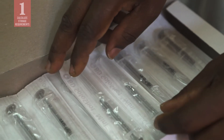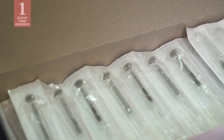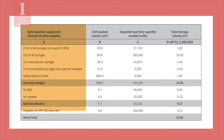To do this, you will need to calculate the storage requirement for each type of equipment, then add these together for the total volume. Let us use this table to walk through the calculation. First, list the safe injection equipment, diluents, and other supplies that you are ordering. Then, for each item, list the unit packed volume — the volume in cubic centimeters for each unit, such as a single syringe or safety box.